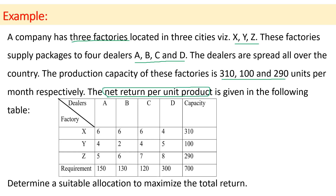The table gives the net profit — the net return per unit product. For example, transporting from X to A gives a return of 6, from X to B gives 6, from X to C gives 6, and from X to D gives 4. This is a maximization transportation problem: we need to determine a suitable allocation to maximize the total return.